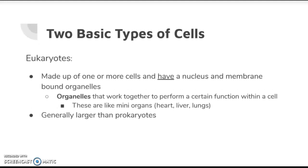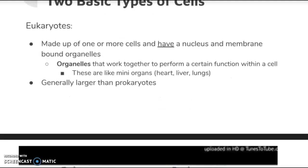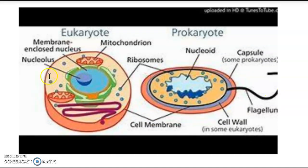Eukaryotic cells are more complex and up-to-date cells — the type humans, animals, and plants have. They are made up of organelles with specific functions and have a true nucleus as their control center. They are generally larger than prokaryotic cells. We'll talk more about the organelles that make up eukaryotic cells later. Prokaryotic cells are more primitive, while eukaryotic cells — found in fungi, animals, and plants — have all the different organelles with different functions.